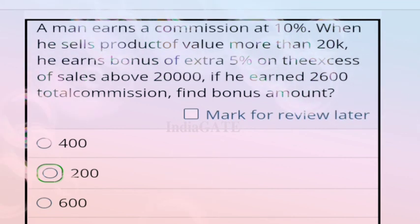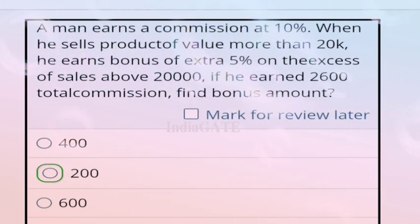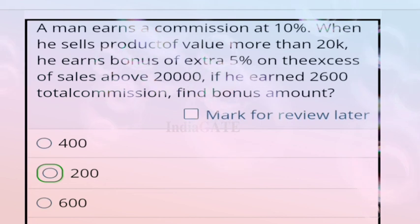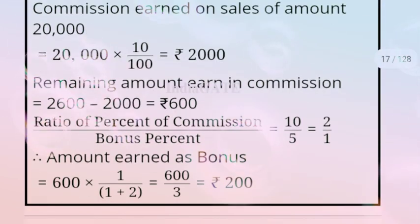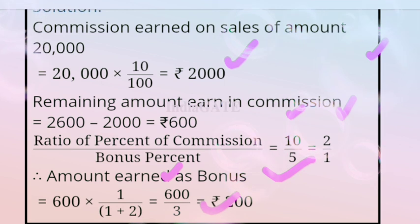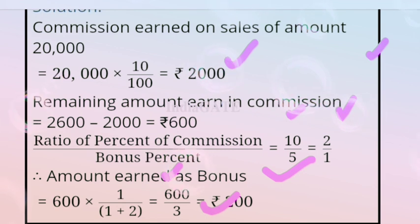Next question: a man earns commission at 10% when he sells a product of value more than 20,000. He earns a bonus of extra 5% on excess sale above 20,000. If he earned 2,600 total commission, find the bonus amount. Correct answer is 200, option B. Commission on 20,000 = 2,000. Remaining = 600. Ratio 10:5 = 2:1, bonus = 600 × 1/3 = 200.